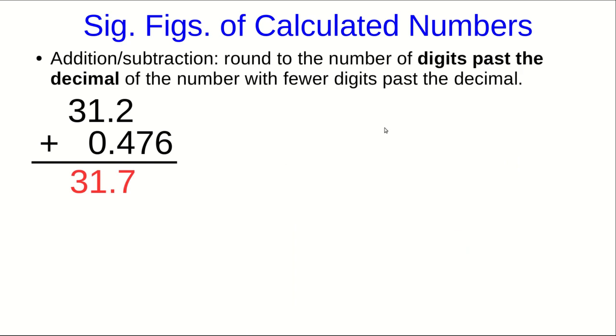This illustrates the rule and the reason for the rule for sig figs of added or subtracted numbers which is that we round to the number of digits past the decimal of the number with fewer digits past the decimal. So as another example look at this addition and you should work through and verify that you understand how I got what I got here.